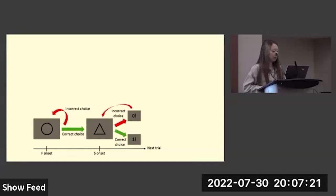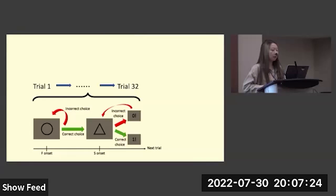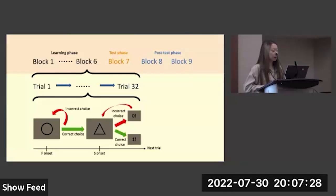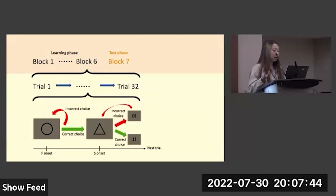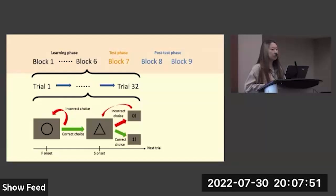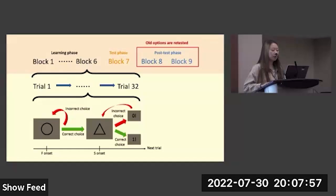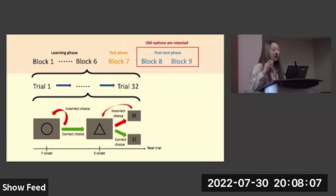That is the structure of a single trial. We have 32 trials per block and nine blocks in total. The first six blocks are the learning phase where participants learn two sets of hierarchical options. In the seventh block is the test phase where we partially modified the old options that participants learned in the learning phase to test for transfer. We also added two more blocks at the end where we retested the old options learned in the learning phase, in order to answer whether the options learned in the test phase would overwrite what was learned in the learning phase.